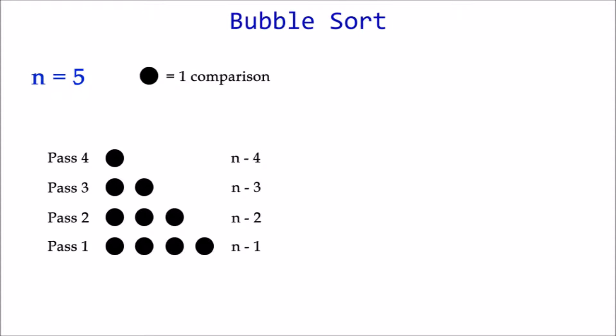But we want to know the total number of comparisons. One option is just adding all the passes together. 4 plus 3 plus 2 plus 1 equals 10. But this would be difficult for bigger lists. It just so happens that this pattern is defined as an arithmetic progression. We can use that formula to easily calculate the total number of comparisons. The formula is n times n minus 1 over 2.